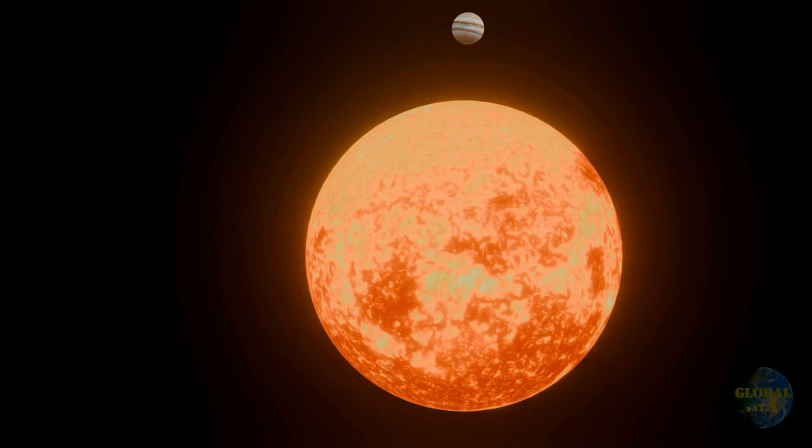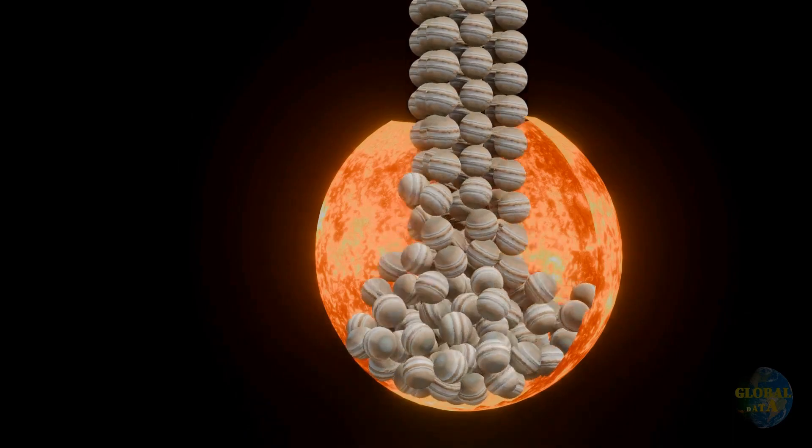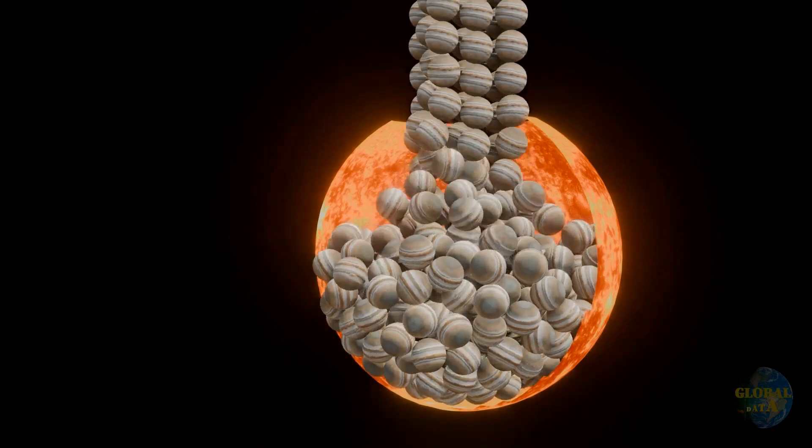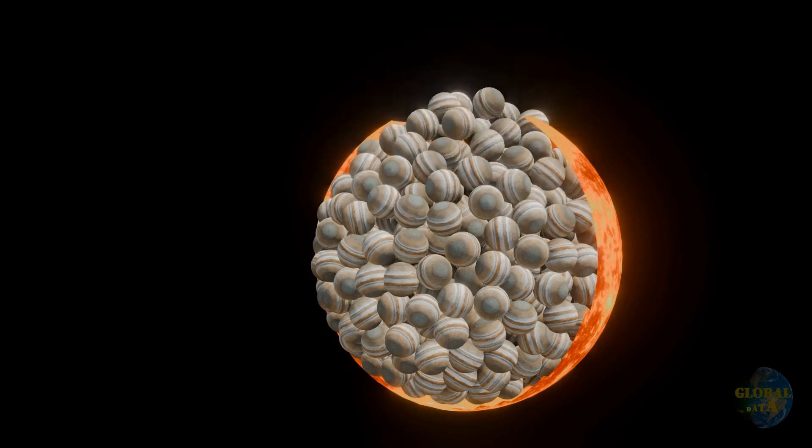But nothing compares to the size of the Sun, which could contain 980 planets the size of Jupiter and a staggering 1,300,000 Earths.